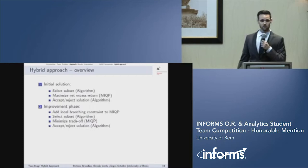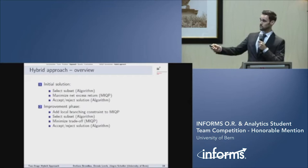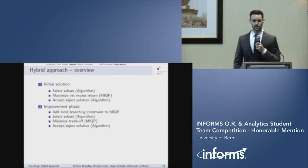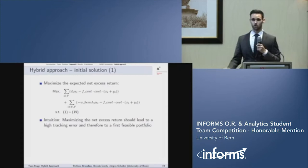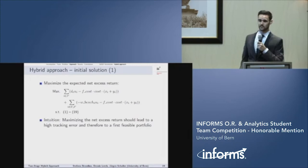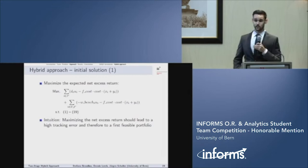Let me proceed to our approach. Our approach has two stages. In the first stage, we create an initial solution by maximizing the net excess return only. In the second stage, we add a local branching constraint to our formulation and minimize then the trade-off. In both stages, we use an algorithm to select a subset and the algorithm also decides whether we accept or reject the solution.